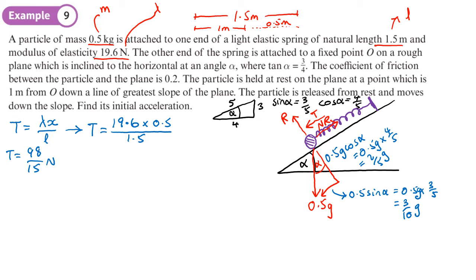Now we'll start resolving the forces because we want to work out the initial acceleration. So if we start by resolving perpendicular to the slope because we're going to need mu R. So that'll give us R equals 2 fifths G.